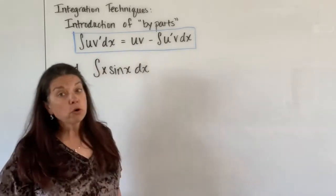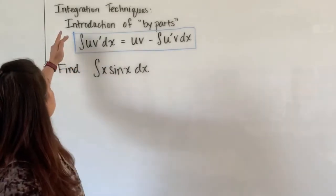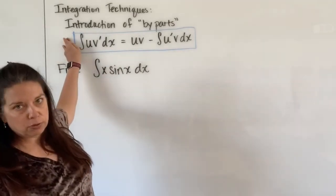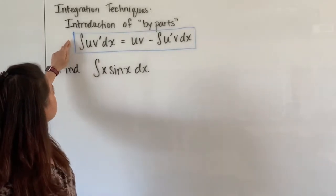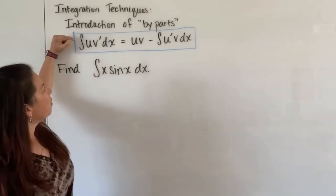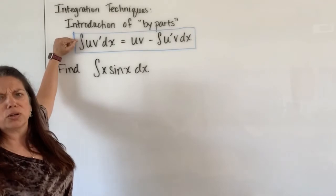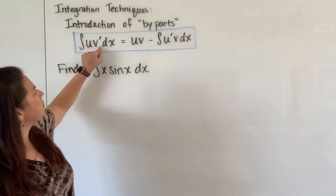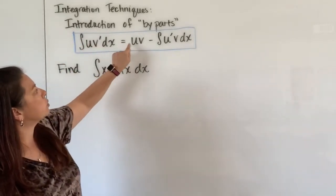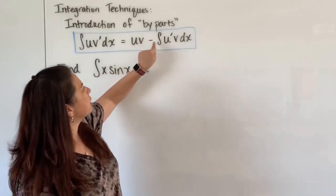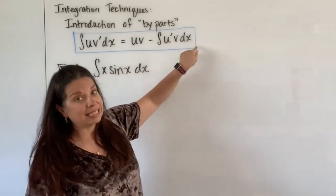I have our formula up here boxed in blue for us to use to help us go through these processes. So here on the by-parts formula we have the integral of u times v prime dx that will be equal to u times v minus the integral of u prime v dx.